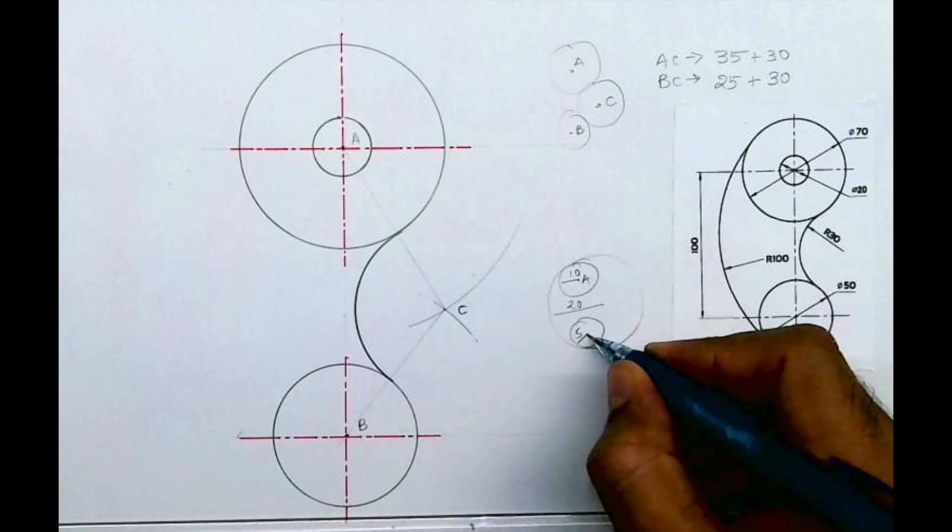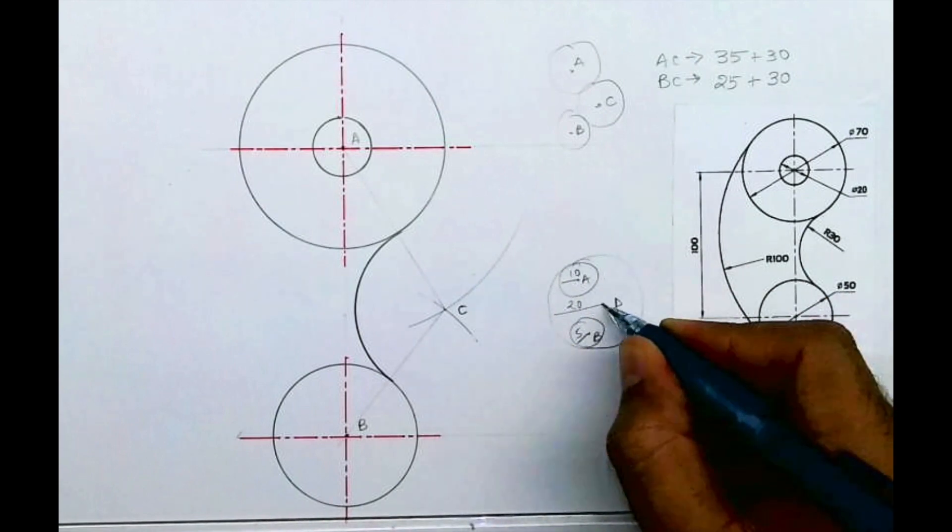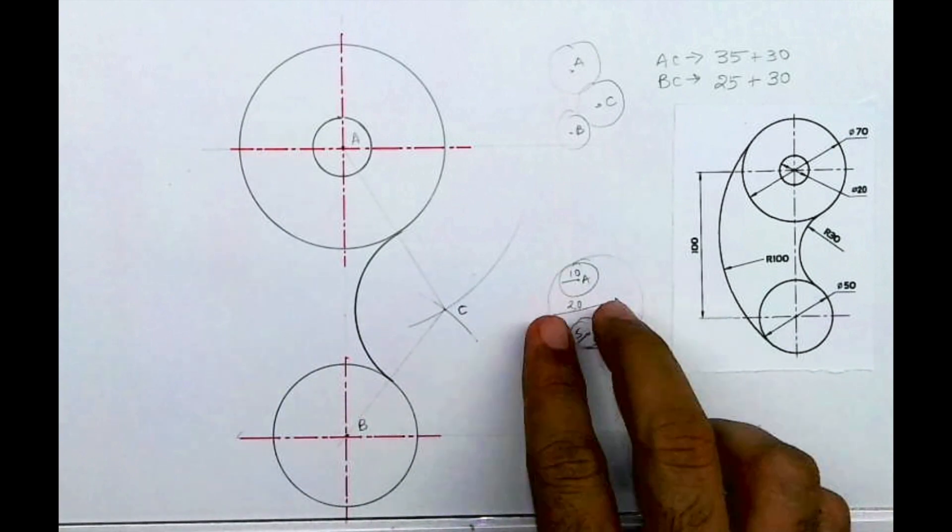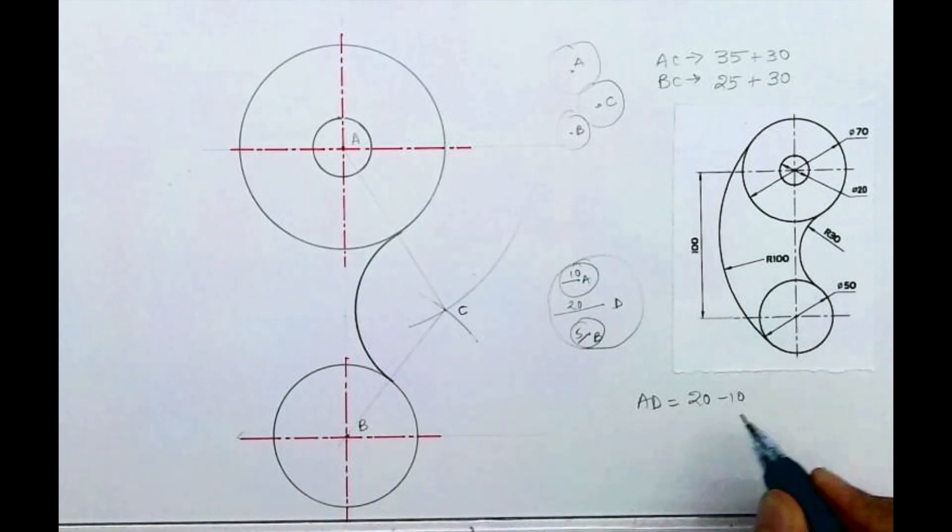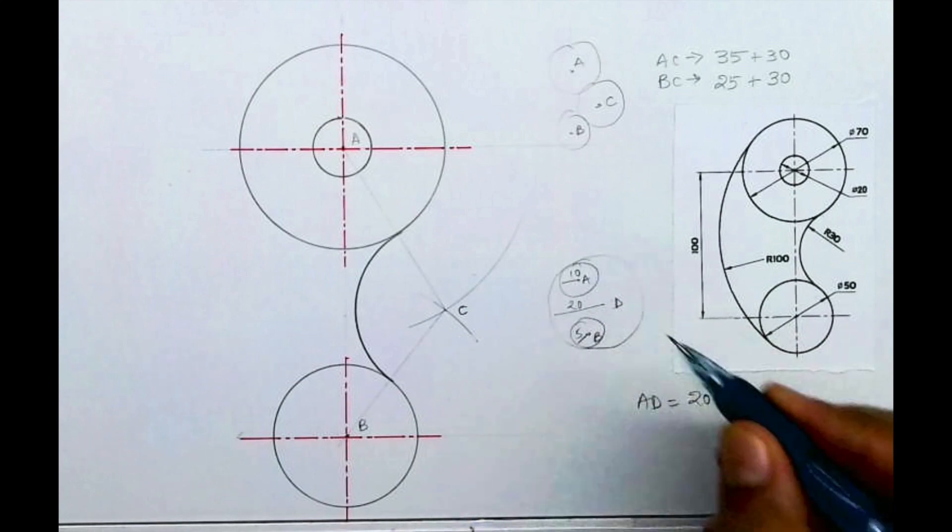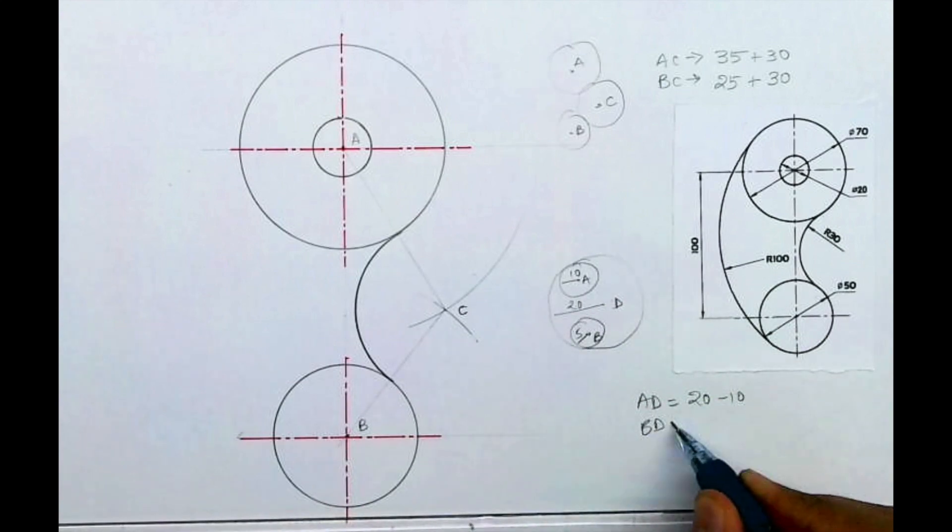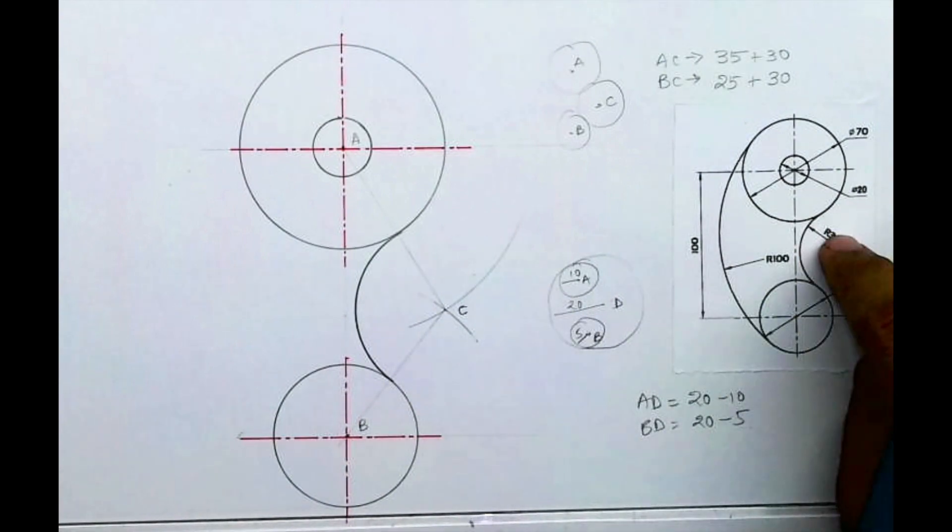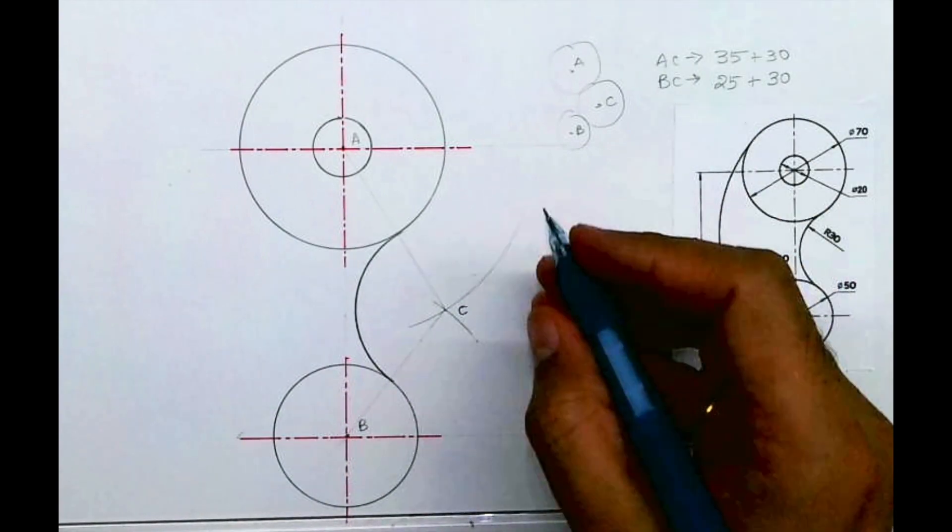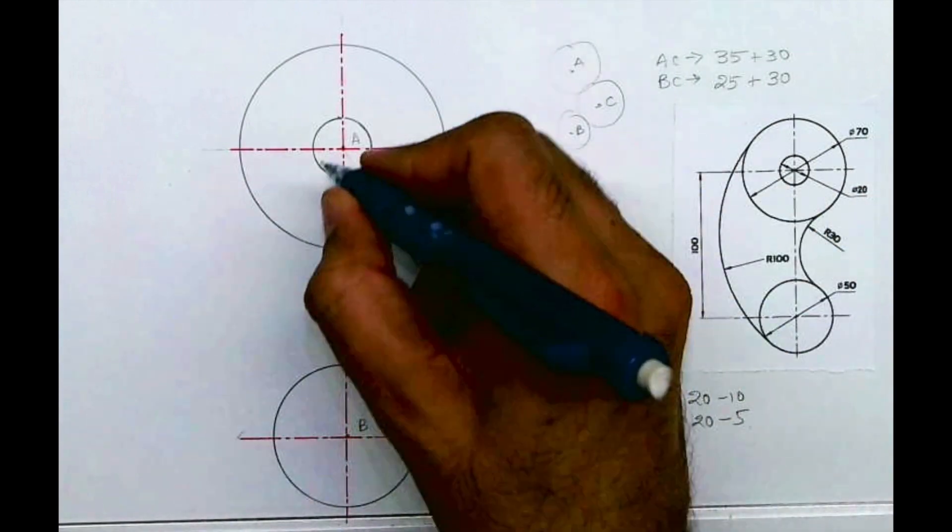This is A, this is B, and this is D. Distance from A to D would be 20 minus 10. When it is internal, we have to subtract. Distance from B to D would be 20 minus 5. Now, the same thing we will do for our diagram. We have radius 100 and radius 35 and 25.